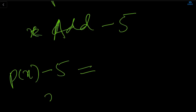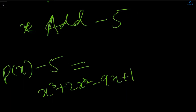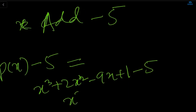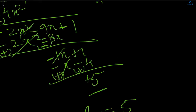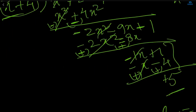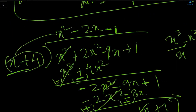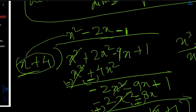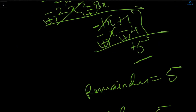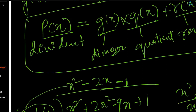When you add minus 5 to the given polynomial px, you get x³ + 2x² - 9x + 1 - 5, which gives x³ + 2x² - 9x - 4. You can see that instead of plus 1, you now get minus 4 at that place, and then plus minus cancels and you get 0. This confirms the polynomial is fully divisible by x + 4.